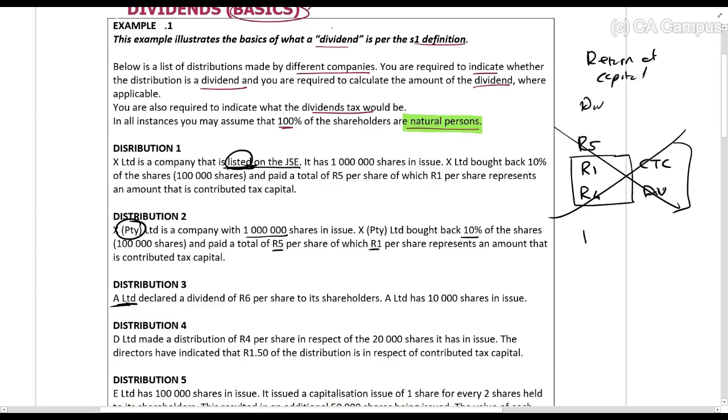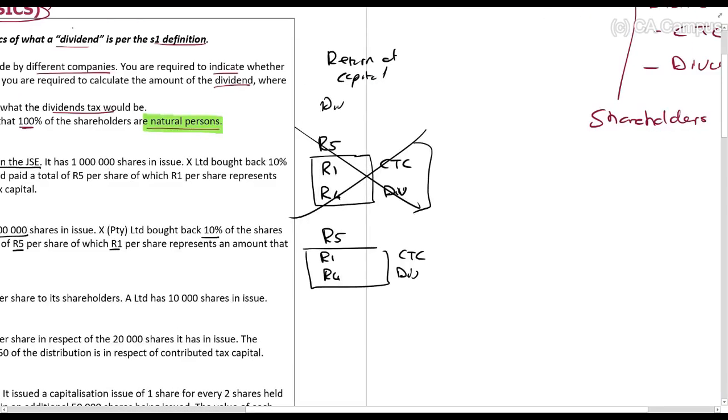They're buying back 100,000 shares. So the dividend amount: 4R times 100,000 equals 400,000 rands. The dividends tax portion is then 400,000 times 20% equals 80,000.